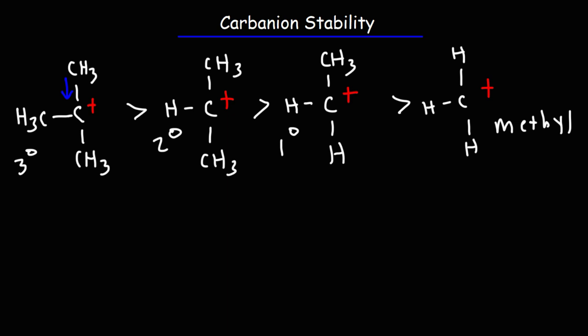Now, the situation is different for carbanions. It's actually reversed. An electron-donating group can stabilize a carbocation because the carbocation wants electrons. It needs electrons to stabilize itself. A carbanion has a negative charge. It doesn't want electrons. That's going to make it less stable.